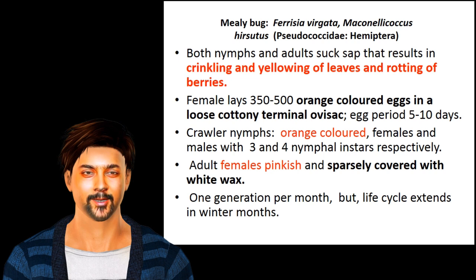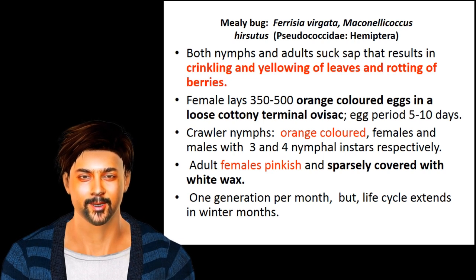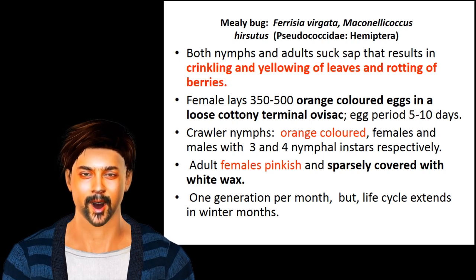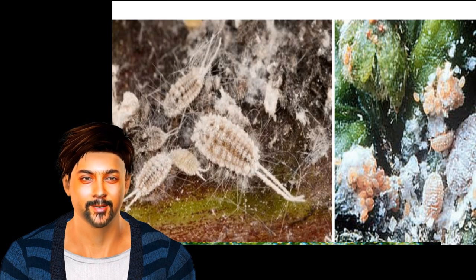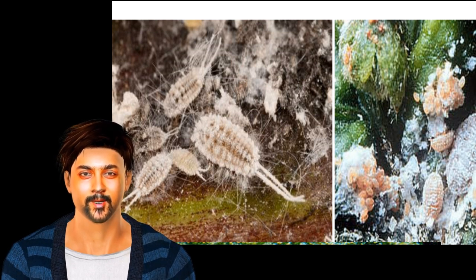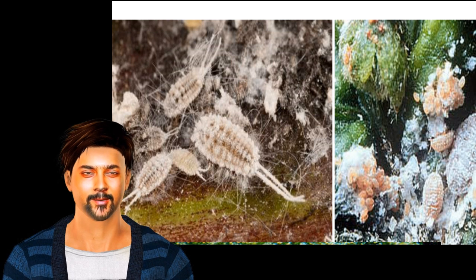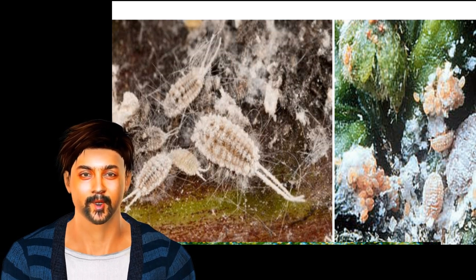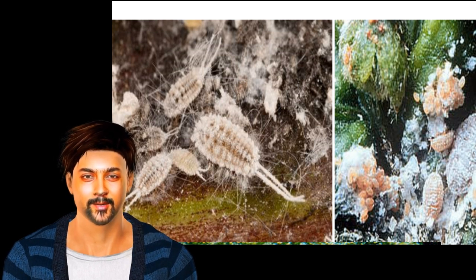Both nymphs and adults suck cell sap, resulting in crinkling and yellowing of leaves and rotting of berries. Female lays 350 to 500 orange-colored eggs in a loose cottony mass at terminal websites. The egg period is about 5 to 10 days. Crawler nymphs are orange-colored; females have 3 nymphal instars and males have 4 nymphal instars. Eggs and nymphs are orange-colored; adult female is pinkish and sparsely covered with white wax. One generation per month, but the life cycle extends during winter months.